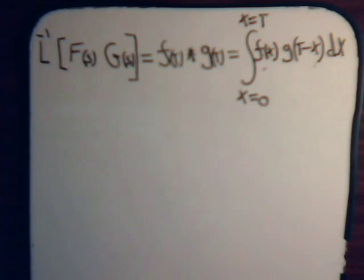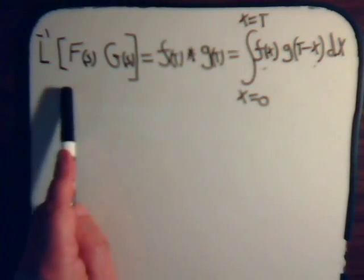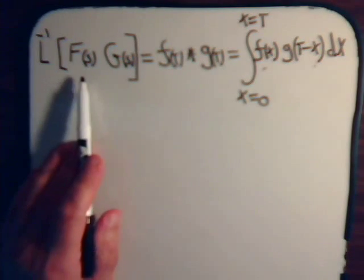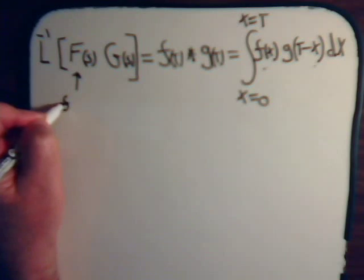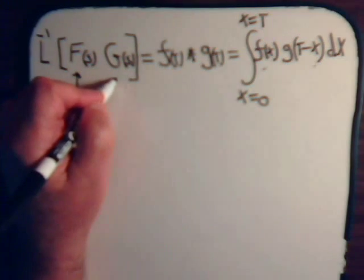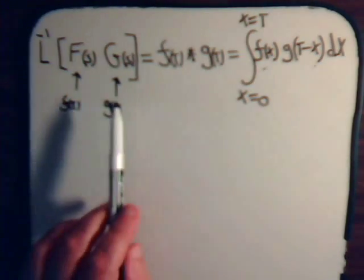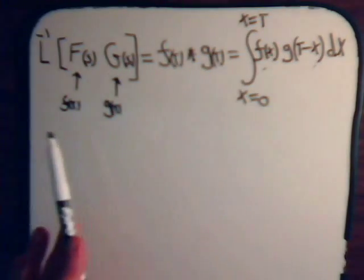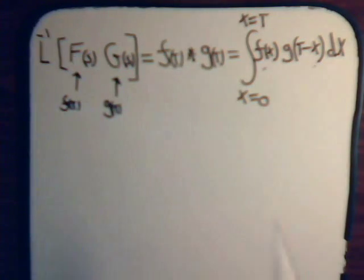The greatest value of the convolution operation in differential equations is from this relationship here. We will prove this equation in a future video. But what this tells us is: we have two Laplace transforms — F(s) is the Laplace transform of f(t), and G(s) is the Laplace transform of g(t). If we multiply the two Laplace transforms together and take the inverse, it's not equal to f(t) times g(t) — it's equal to the convolution of f(t) with g(t).